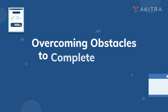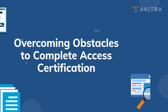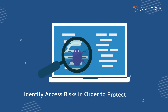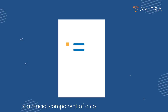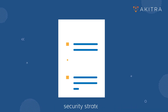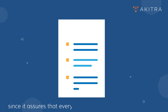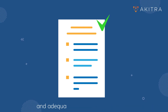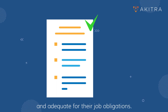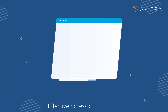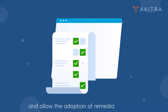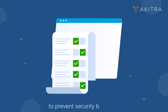Overcoming Obstacles to Complete Access Certification. First, identify access risks in order to protect assets. Access certification is a crucial component of a company's information security strategy, since it assures that every user is granted access permissions that are strictly required and adequate for their job obligations. Effective access certifications can detect unsafe circumstances and allow the adoption of remedial measures to prevent security breaches.